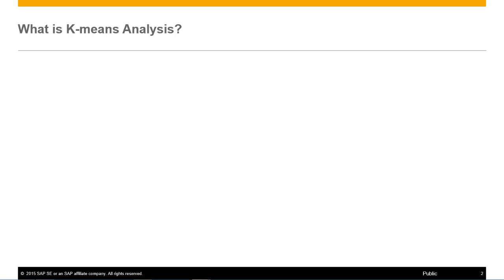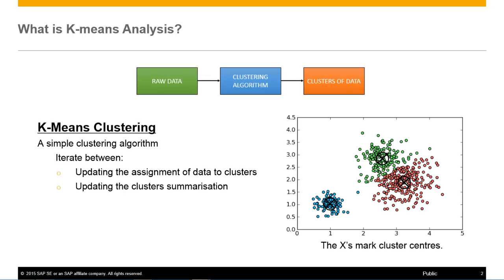So what is k-means analysis? In predictive analysis, k-means clustering is a popular method of cluster analysis in data mining. A cluster refers to a small group of objects. Clustering is grouping those objects into clusters based on similarity. The k in k-means stands for the number of groups that we want to put our objects in. The k-means algorithm partitions a number of objects into clusters in which each object belongs to the cluster with the nearest centre.